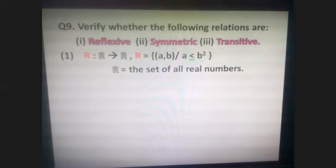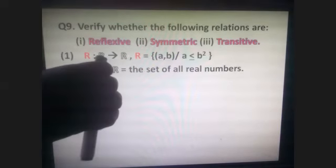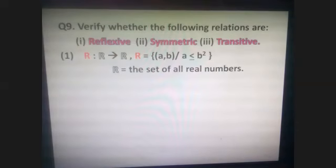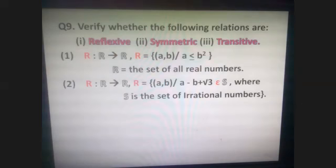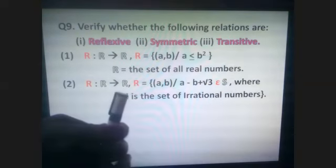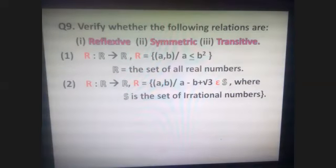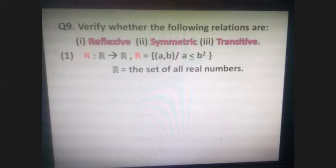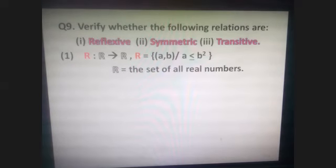Let us go forward with a few more questions. First: R from ℝ to ℝ, where R equals the set of (a,b) such that a ≤ b², where ℝ is the set of real numbers. Second: R from ℝ to ℝ such that R equals the set of (a,b) such that a − b + √3 is an irrational number, where S is the set of irrational numbers. Let us take up question one first.